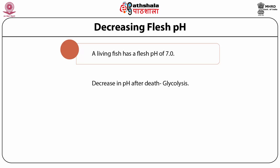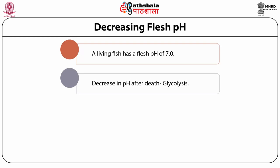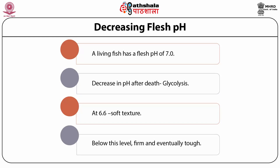After death, residual glycogen is broken down via glycolysis to pyruvic acid and then lactic acid. As this happens, the flesh becomes more acidic. If the pH remains above 6.6, the texture is reasonably soft, but below this level the flesh becomes firm and eventually unacceptable.